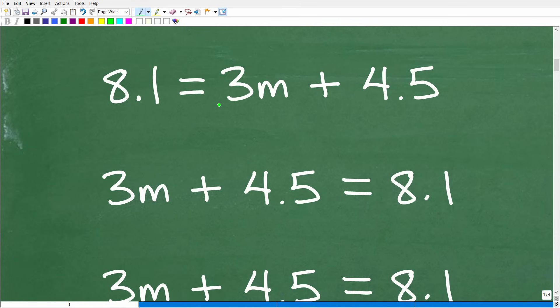So I have 8.1 is equal to 3m plus 4.5. So for me personally, you don't have to do this, I see the variable on the right-hand side. So I'm going to be like, you know what, I'm going to take this whole thing here, and I'm going to take it over, and I'm going to move it to the left-hand side. So I'm just going to switch sides, just as I kind of showed you with 2x is equal to 10, or 10 is equal to 2x, and 2x is equal to 10. You can do that.